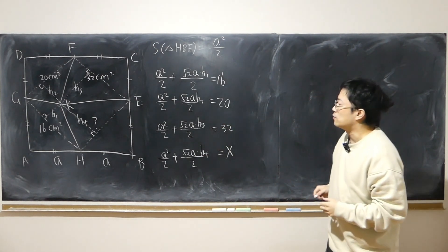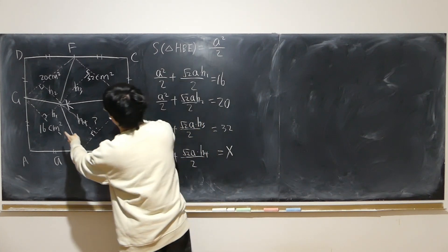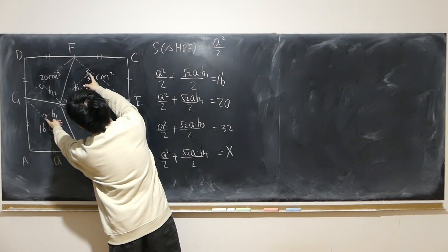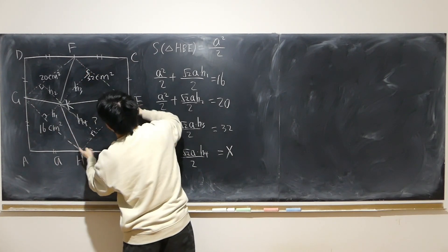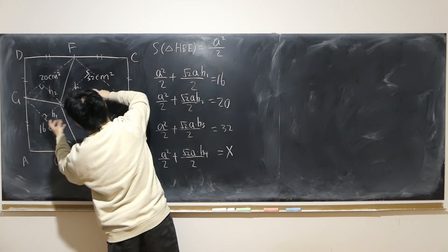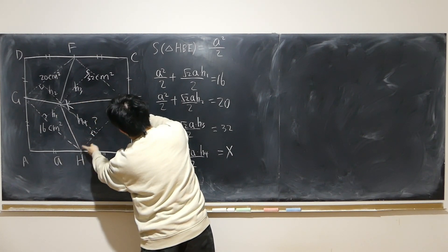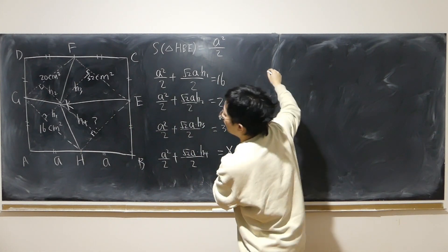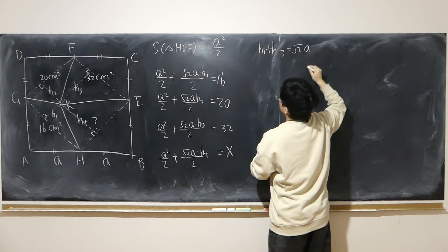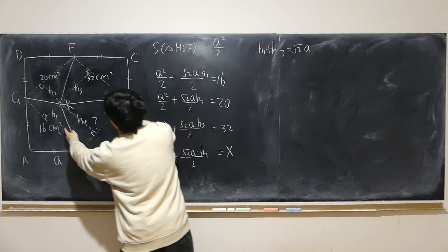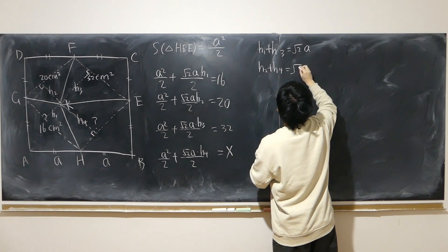The sum H1 plus H3 equals √2 times A, since segment F-G-E-H forms a square of side A. Likewise, H2 plus H4 also equals √2 times A. So we have six unknowns and six equations, and if we're lucky enough we may have a solution — and in this case I think we do.